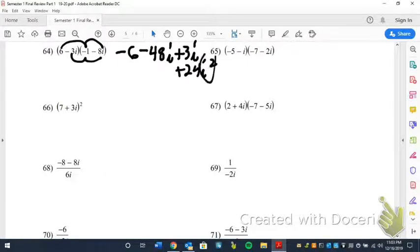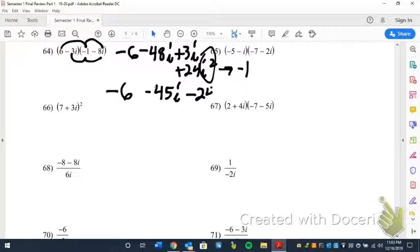Now remember, i squared, any i format can be reduced to either, you know, i squared is negative 1. That's really going to be the one you're using. So we have negative 6 minus 45i minus 24. We combine the negative 6 and the negative 24. So we get negative 30 minus 45i.